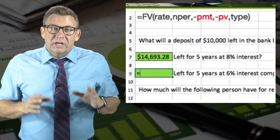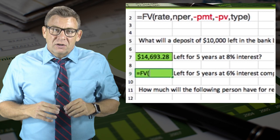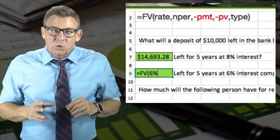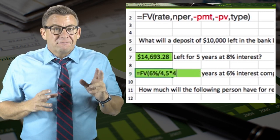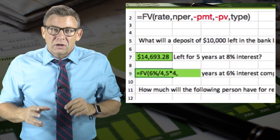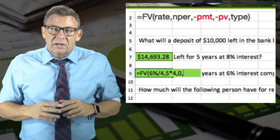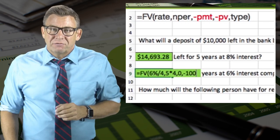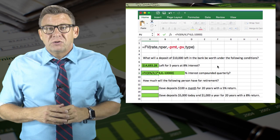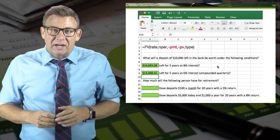So let's see this in action. I enter equals FV, open parentheses, 6% divided by 4, then 5 times 4, zero because there still isn't a payment, and minus 10,000 for the present value. This returns a future value of $13,468.55.